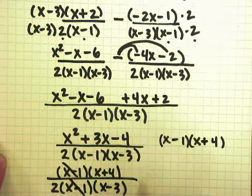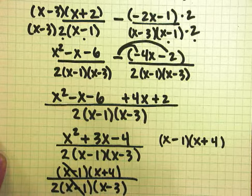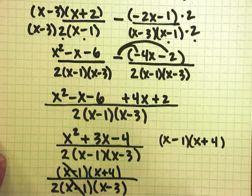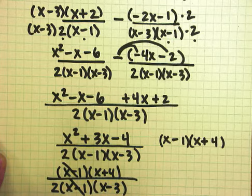Now notice that I have an x minus 1 on top and on bottom. So that means I can cancel those out. And all I have really is x plus 4 over 2 times x minus 3. Feel free to put parentheses if you want on top - they're not necessary.